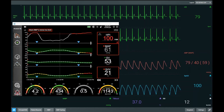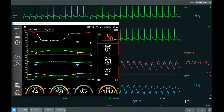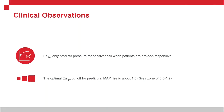By giving a fluid bolus, we have improved stroke volume but we have not increased blood pressure, and therefore we must look to other parameters to decide on the correct intervention. Eadyne predicts pressure responsiveness when patients are preload responsive. The optimal cutoff for Eadyne in terms of predicting a pressure responder is 1.0, but there is a gray zone of between 0.8 and 1.2.